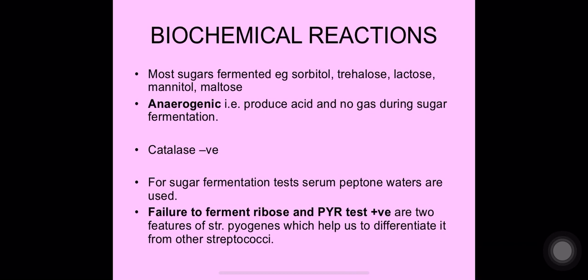Biochemical reactions of Streptococcus pyogenes: most sugars are fermented — for example, sorbitol, trehalose, lactose, mannitol, maltose, etc. Streptococci are anaerogenic — they do not produce gas during fermentation, only acid. Serum peptone waters are used for sugar fermentation tests. The failure to ferment ribose and a positive PYR test are two features that differentiate Streptococcus pyogenes from other streptococci.